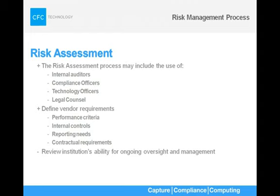After completing the general assessment of the risks relative to the institution's overall strategic plan, you should also review the institution's ability to provide adequate ongoing oversight and management of the third-party relationship. While identifying and understanding the risks with a vendor is critical at the beginning of a process, long-term management of the relationship is vital to the overall success of the program. So not just about identifying the risks — you also want to monitor that relationship as well. Vendor management is an ongoing process and part of your organization.